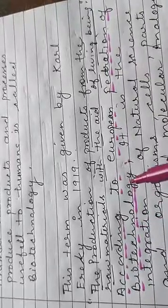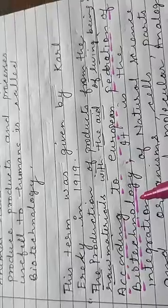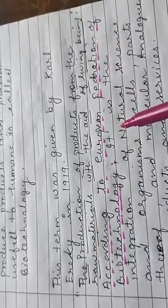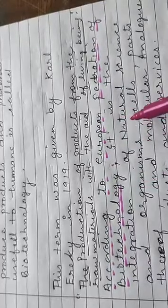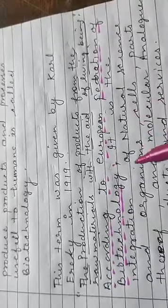According to the European Federation of Biotechnology, it is the integration of natural science and organisms. Natural science and organisms - an integration in which a product is made with their help that is beneficial for humans. That is called Biotechnology.